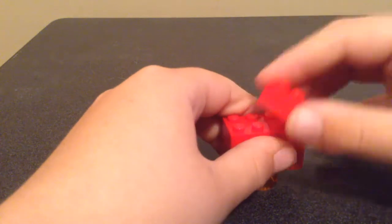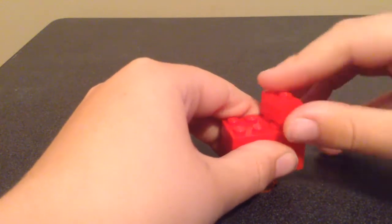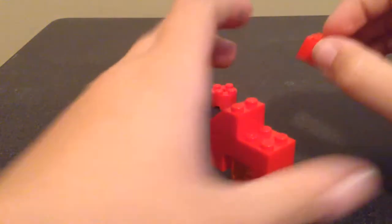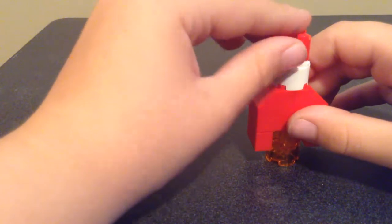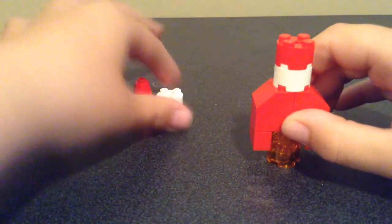Then you take these pieces, place them on there, take your white piece, and put it on there, and then take your red piece, put it on there.